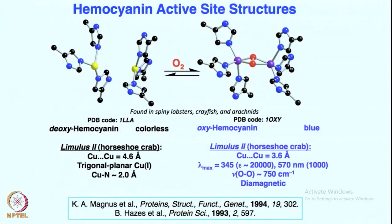This is a beautiful enzyme — hemocyanin. You have two copper centers here, with three histidines on each of the copper centers. It is found in spiny lobsters, crayfish, and arachnids. This is the oxygen carrier protein, just like hemoglobin in our blood is used for oxygen-carrying purposes.